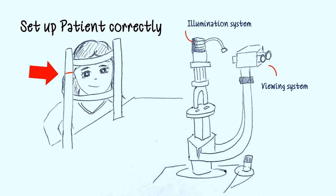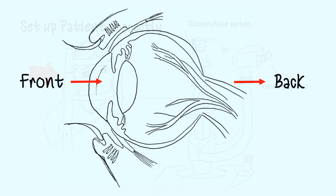I will talk about the illumination system, which is your light source, and the viewing system, which is the binoculars you look through. Basically, examination occurs in order — you start at the front of the eye and then work your way to the posterior pole. We'll talk through anterior to posterior examination and particular techniques that are only used when clinically indicated.